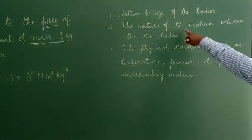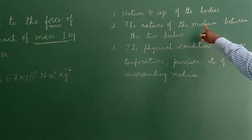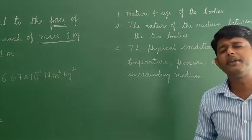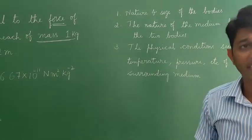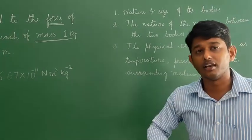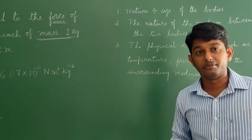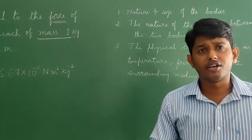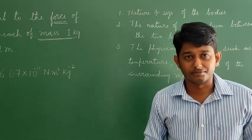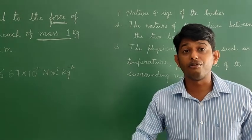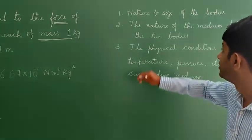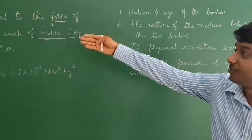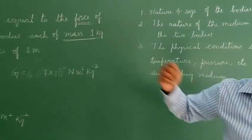The second factor is the nature of the medium between the two bodies. Any two bodies can attract each other regardless of the medium — whether it is liquid, solid, gaseous, or even plasma. These types of media can never affect the universal gravitational constant.